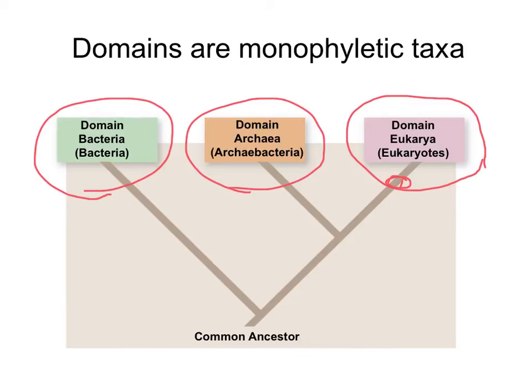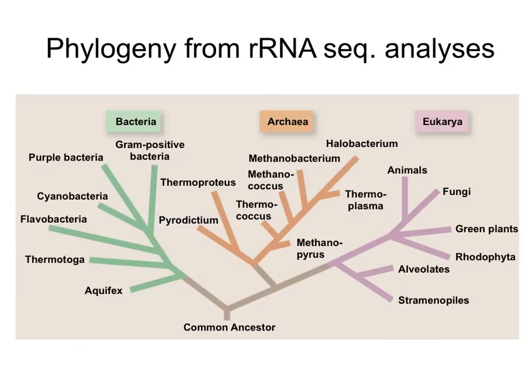If we look at the tree of life including every single organism, that would also be a monophyletic group, because we all share the common ancestor of all living things. This phylogeny has been formed by using the sequence of ribosomal RNA. By comparing differences in the RNA sequence that makes ribosomes, we can group organisms into one of the three domains. This shows the importance of not only looking at morphological traits, but also at DNA and molecular traits to understand relationships between organisms.